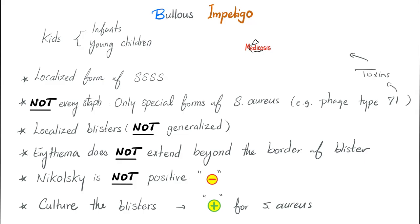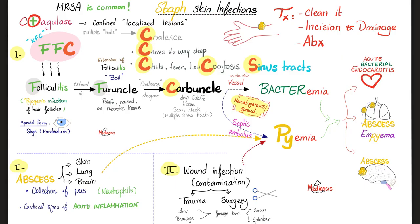Mnemonic on Staph skin infections: Staph is coagulase positive, and that's why lesions are confined and localized. It can start with an infection of a hair follicle or an eyelash — that's folliculitis or stye (hordoleum). If it extends, it becomes a furuncle (boil). These boils can coalesce together and carve deeper into the skin. When they cause bacteremia, you get chills, fever, leukocytosis with multiple sinus tracts visible on the skin — that's a complicated carbuncle. Then a septic embolus of Staph reaches the blood (pyemia) and can reach target organs: acute bacterial endocarditis in the heart, lung abscess in the lungs, and brain abscess, encephalitis, or meningitis in the brain.